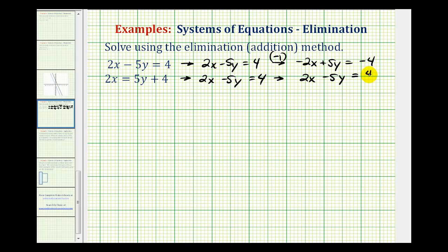And now watch what happens when we add these two equations together. Well the x terms and y terms are both opposites, so both sums would be 0. And on the right side we have negative 4 plus 4. That would also be 0.